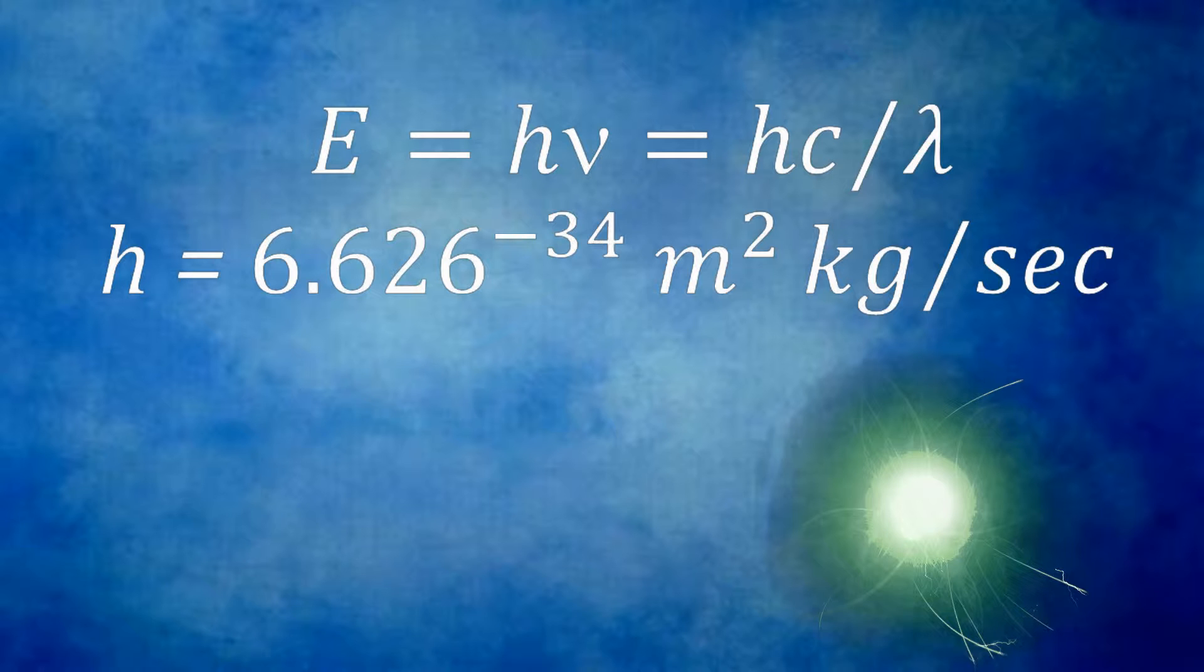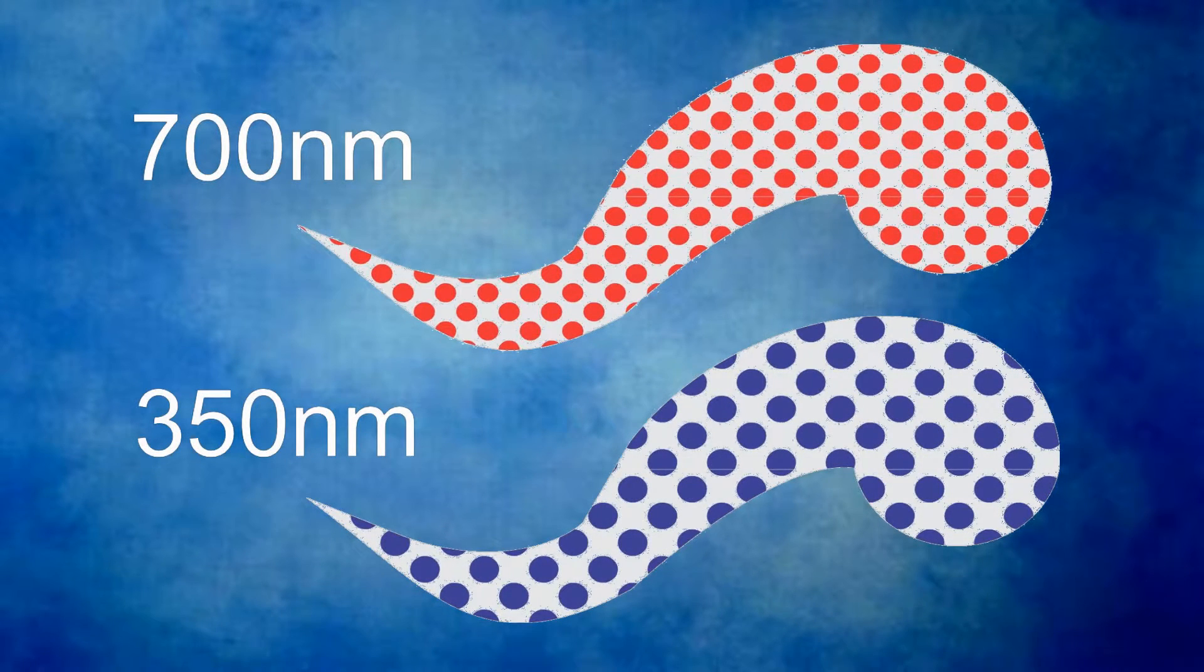Before we leave the photon, let's take a look at one characteristic that's very important. You must have noticed that the energy of a photon is inversely proportional to its wavelength. That means if we have a photon of, say, 350 nanometer wavelength, it will have twice the energy of a photon at 700 nanometer wavelength. Put another way, if we have two light sources giving us equal amounts of light energy, the one at 350 nanometer wavelength will have only half the number of photons as the one at 700 nanometer wavelength. This will become very important to us when we discuss sensing light.